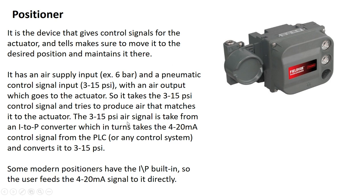The 3-15 PSI air signal is taken from the I2P converter, which in turn takes the 4-20 mA control signal from the PLC or any control system such as a DCS, and then converts it to 3-15 PSI. The I2P converter is the current-to-pressure converter — it takes the industry standard 4-20 mA current signal and converts it to the 3-15 PSI air pressure signal that the control valve positioner accepts. Some modern positioners have the I2P unit built in, so the user just feeds the 4-20 mA signal directly.